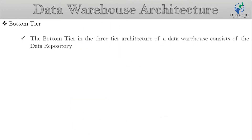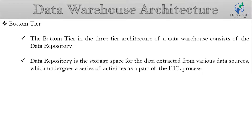The first is the bottom tier. The bottom tier in the three-tier architecture of a data warehouse consists of a data repository. The data repository is the storage space for data extracted from various data sources, which undergoes a series of activities as part of the ETL process.